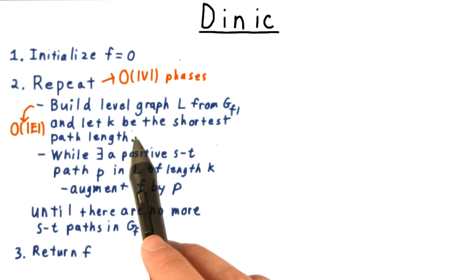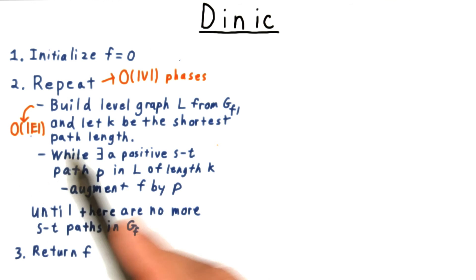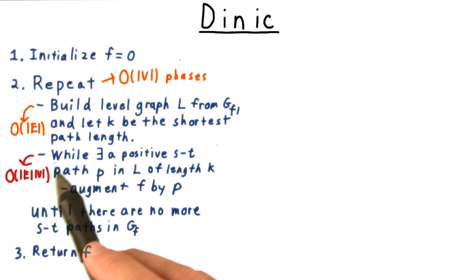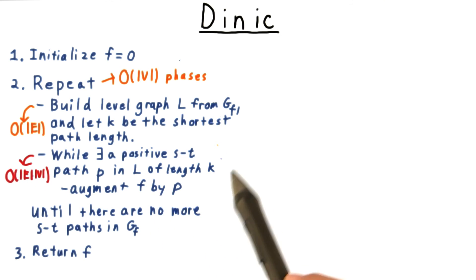Within a phase, the level graph is built by breadth-first search, so that only costs order E time. The hardest part of the argument will be that this loop altogether takes only E times V time. We'll see this argument in a second.